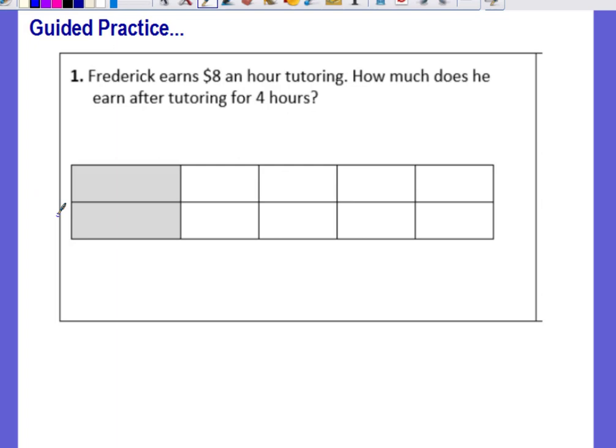Okay first things, labels. What are we comparing here? Remember ratios are comparisons. We're comparing how much he earns to the number of hours that he works. So you could put earns or earnings or a dollar sign and then the number of hours. We're given that he earns eight dollars for one hour. That is actually our unit rate. So I'm going to put it right here, eight dollars for one hour.